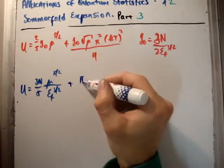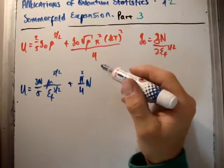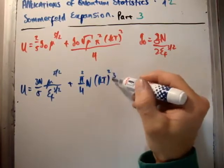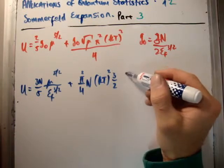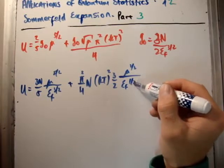And then we're going to get this extra term here, pi squared over 4, n, kt to be squared, 3 over 2, mu to the half, and finally E Fermi to the half.